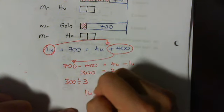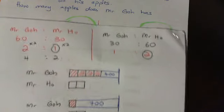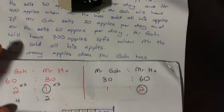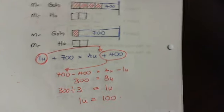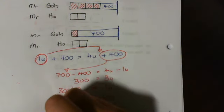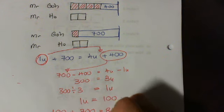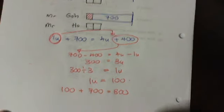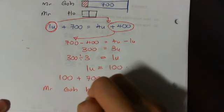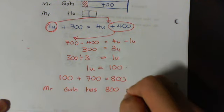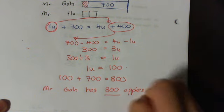300 equals 3U. So 1U is equal to 300 divided by 3, which means 1U is 100. They ask how many apples does Mr. Go have? Mr. Go has 1 unit, which is 100, plus 700. In all, he has 800 apples. Okay, that's it.